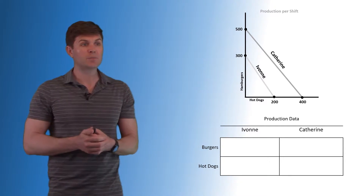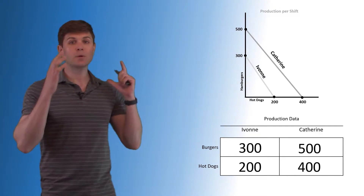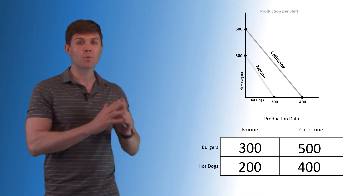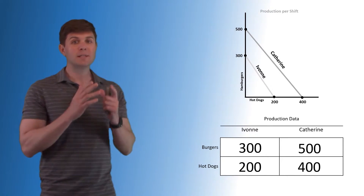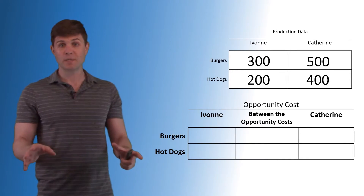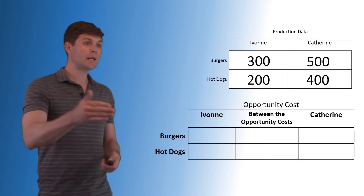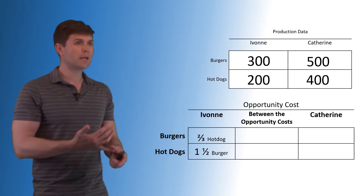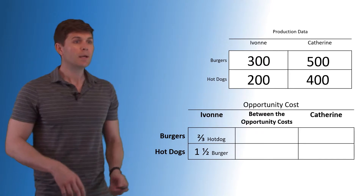The first Production Possibility Frontier we see on this page is Catherine and Yvonne. They are producing hot dogs and hamburgers. We pull the information from the PPF and set it up in a certain way. This is the process I want you to follow so that when you're taking the exam you don't make any mistakes, because there are a lot of flip-flops you can make — flip-flopping opportunity cost, that sort of thing. It's an easy mistake to make, so I'm giving you a method that doesn't allow for mistakes. We pull this information, and then we get the opportunity cost. We have our production data up top — Yvonne and Catherine's ability to produce burgers and hot dogs.